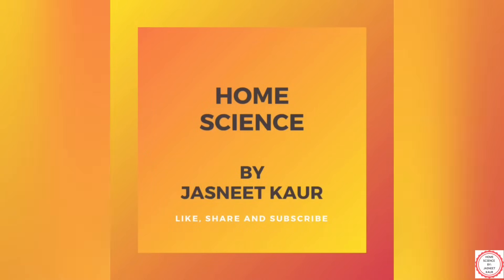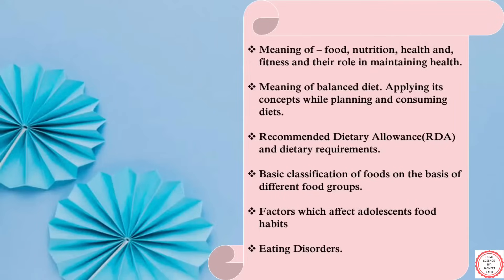Let's look at the topics we have covered in the previous two parts of this chapter. We have discussed about meaning of food, nutrition, health and fitness and their role in maintaining health. Meaning of balanced diet and its concepts, recommended dietary allowance, basic classification of foods on the basis of different food groups, factors which affect adolescence, food habits and eating disorders.